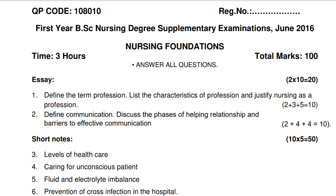Answerable question. Question number 1: Define the term 'professions' — 2 marks. List the characteristics of professions — 3 marks. And justify nursing as a profession — 5 marks. Total 10 marks.